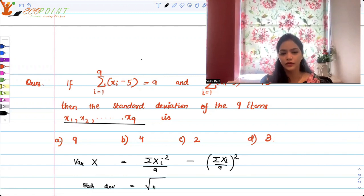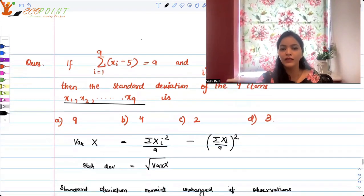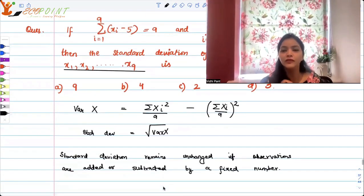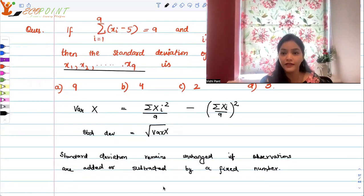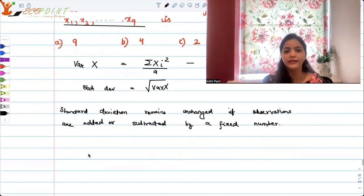Now, variance or standard deviation remain unchanged if observations are added or subtracted by a fixed number. So if you add or subtract a fixed number from your observations, then there would be no change in standard deviation or variance.